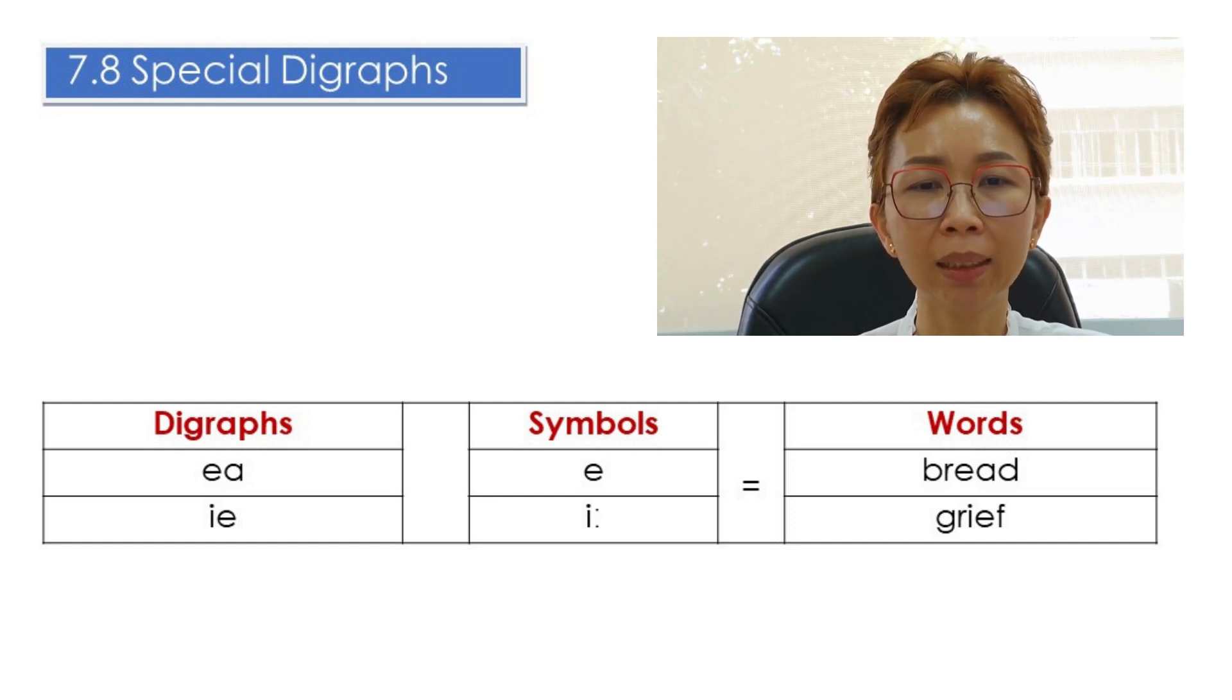And the digraph IE also takes another sound, E, as in the word grief. Gr, e, f, grief.